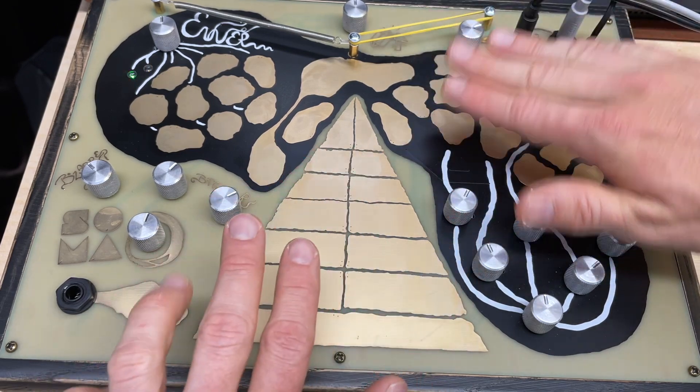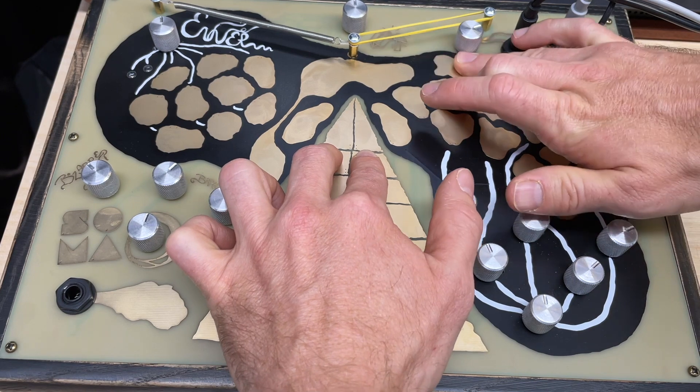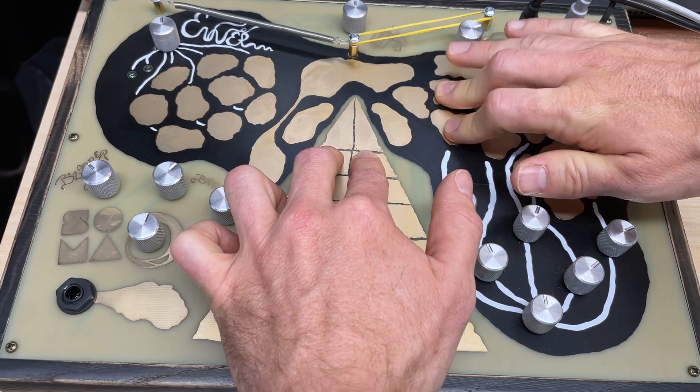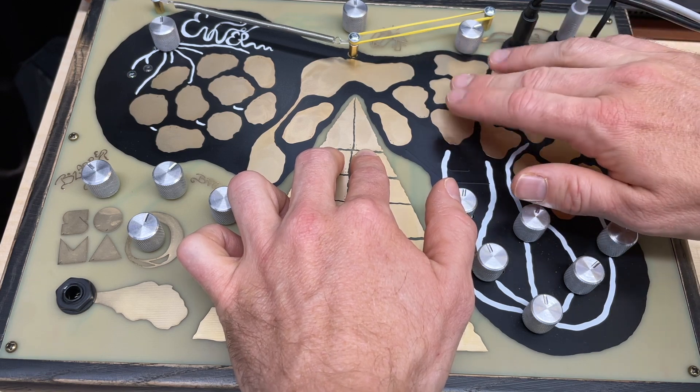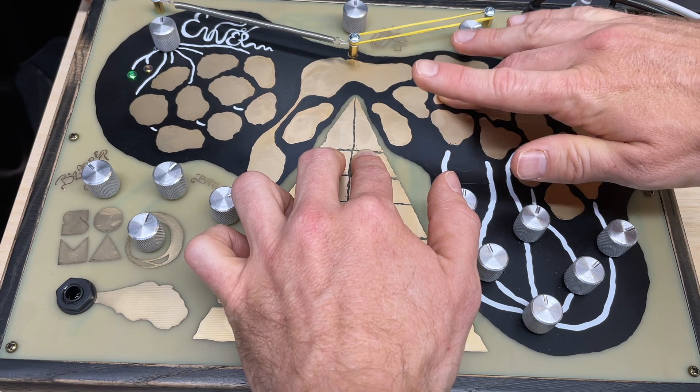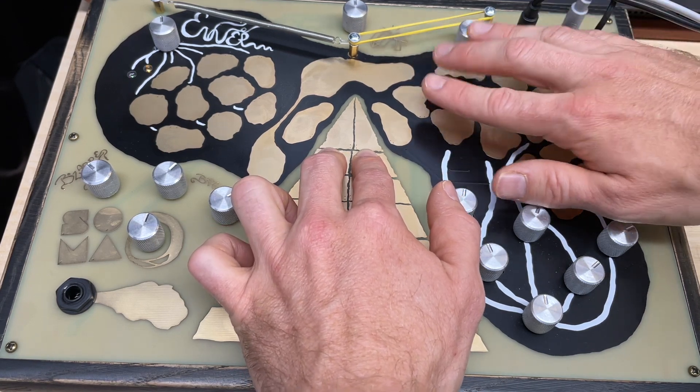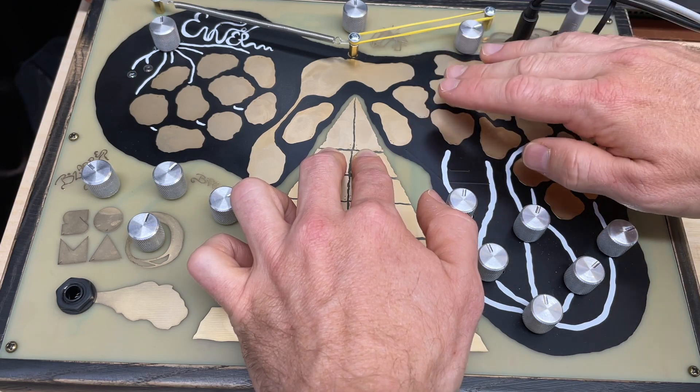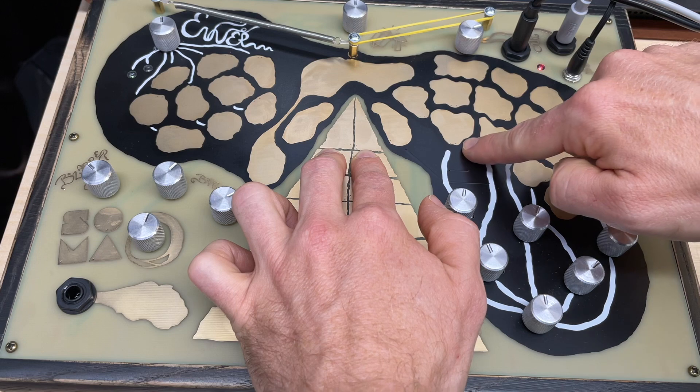And then synth voice five is sort of a special case. You have two separate modulation inputs for voice five. You can actually hear that it's really changing the pitch. And then this is sort of a minus 12 volts, I think, that's connected to this modulation button.